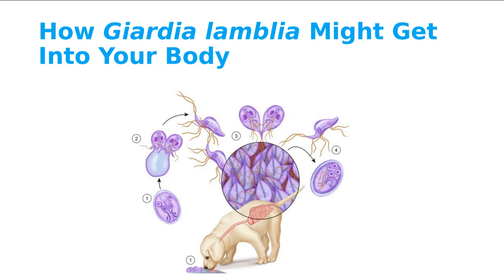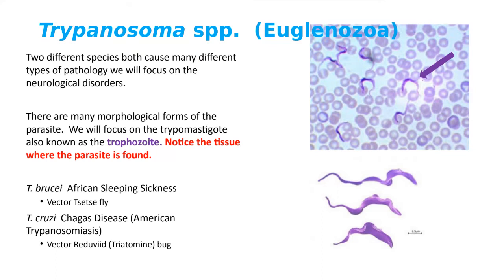Now we're going to the Euglenozoa. The two organisms I selected are hemoflagellates — they're going to be in blood. Can you see the blood in the image? There are two different species. Trypanosoma brucei gambiense causes African sleeping sickness — the vector is the tsetse fly. And Trypanosoma cruzi causes Chagas disease — the vector is the kissing bug, the reduviid bug, or the triatomine bug. You're only going to be responsible for the trophozoite.